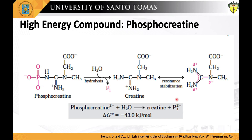In phosphocreatine, the phosphorus-nitrogen bond can be hydrolyzed to generate free creatine and inorganic phosphate. The release of inorganic phosphate and the resonance stabilization of creatine favor the forward reaction. The standard free energy change of phosphocreatine hydrolysis is large, at negative 10.3 kilocalories per mole, or negative 43.0 kilojoules per mole. In all these phosphate-releasing reactions, the several resonance forms available to inorganic phosphate stabilize this product relative to the reactants, contributing to an already negative free energy change.